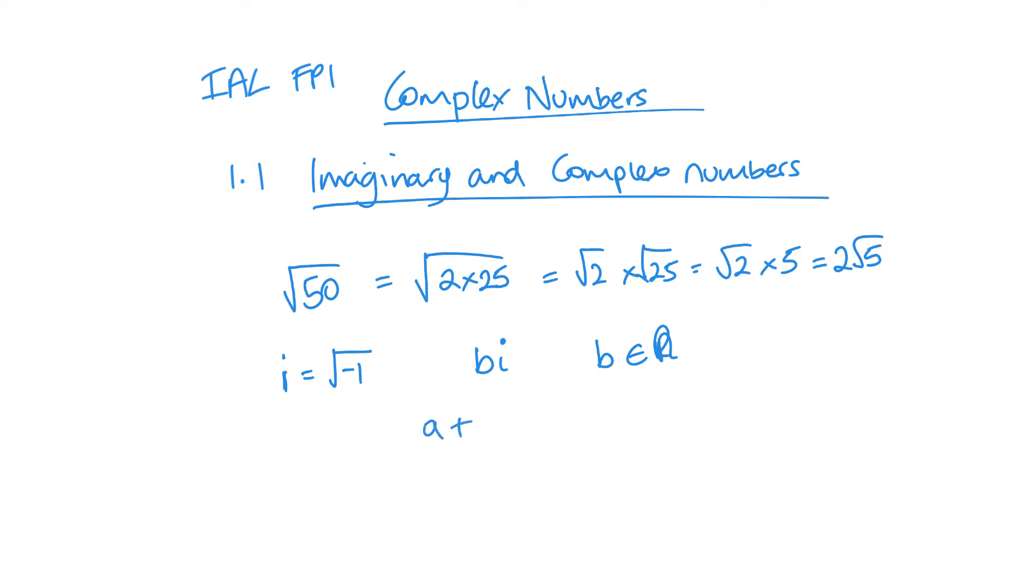So this would be a complex number would be a plus bi where a and b are both real numbers. So what we'll do first is just deal with imaginary and then we'll start looking at the complex.